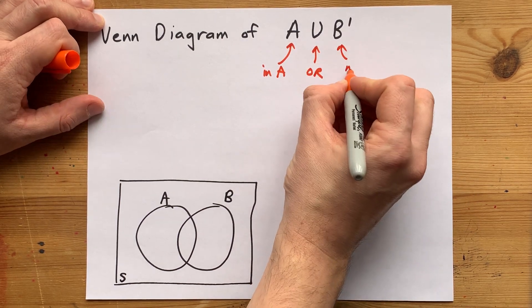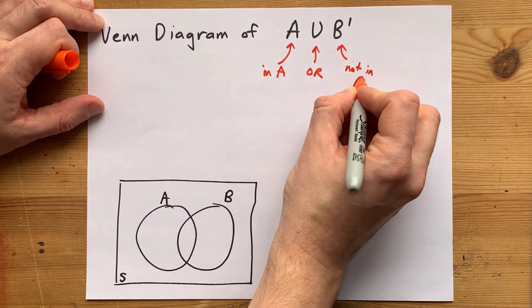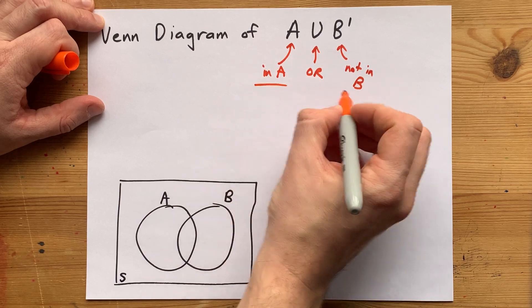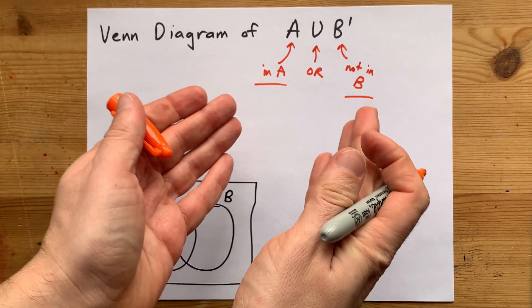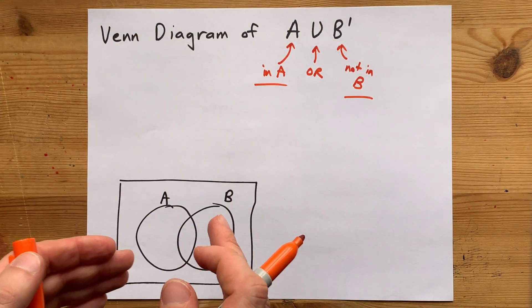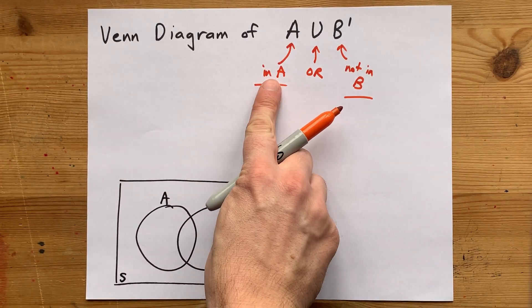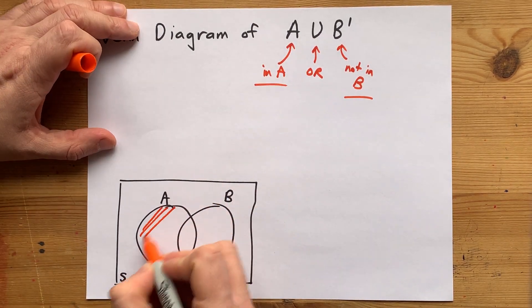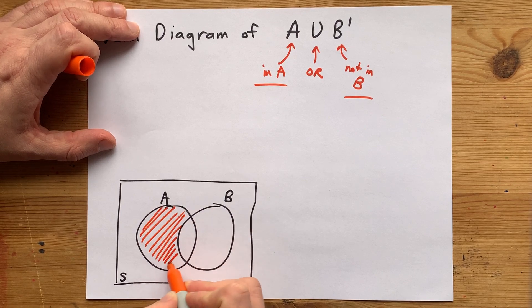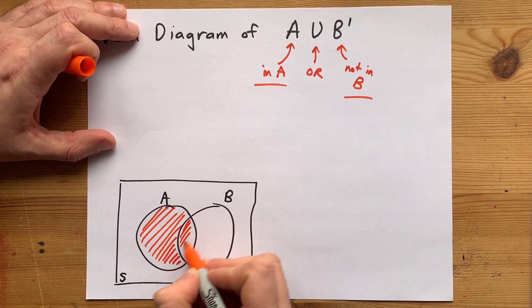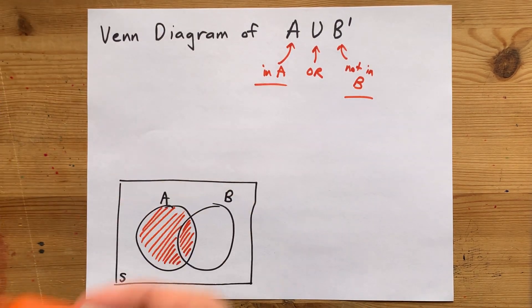And then this means not inside of B. So now I have two different conditions, and either one will count towards shading. So, let's start with in A. This section counts because it's definitely in the A circle, and this section counts because it's in the A circle as well.